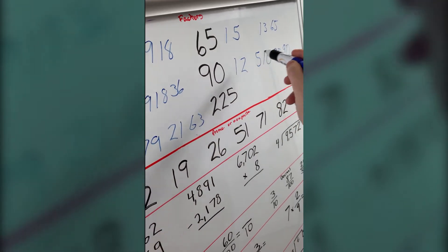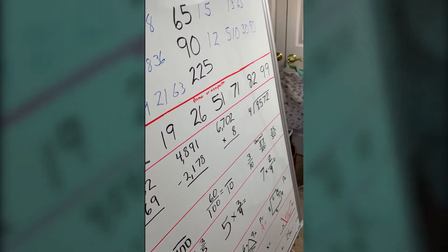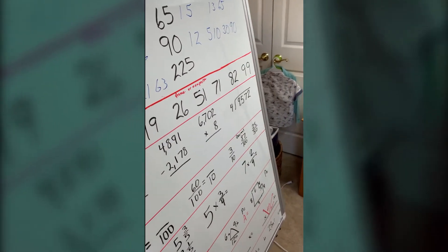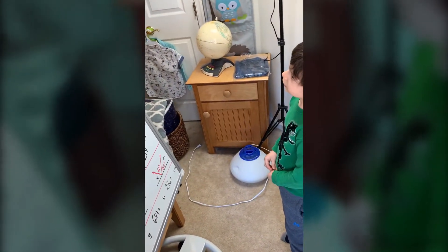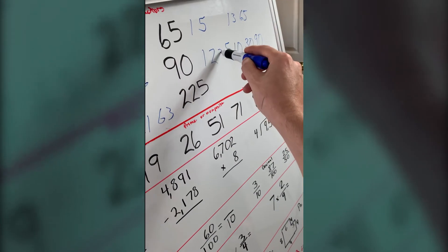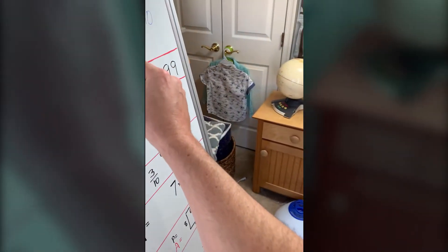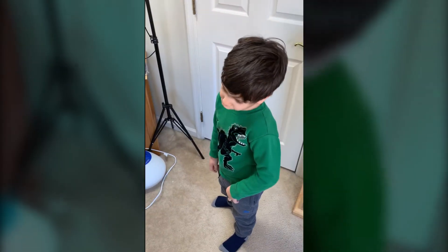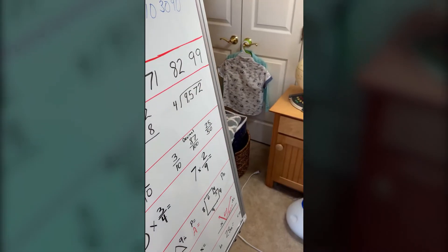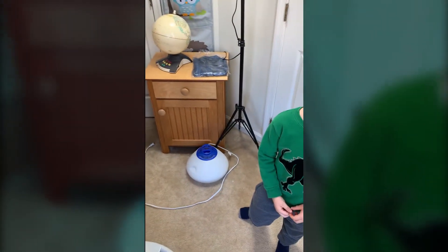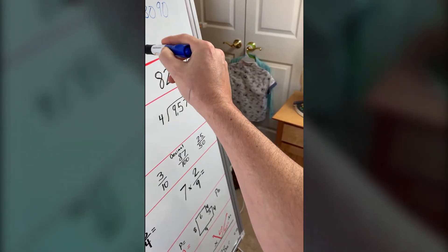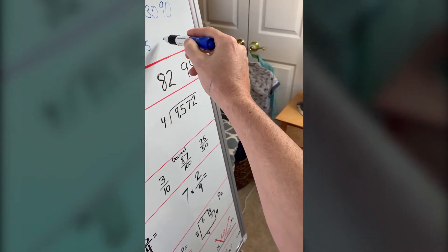What times 30 equals 90? What times 3? And the factors of 225 are 1, 5, 15, 25, and itself, I think.